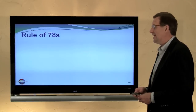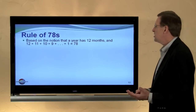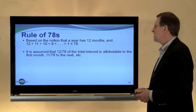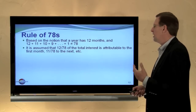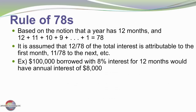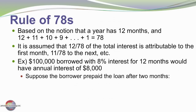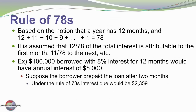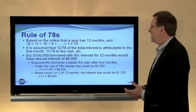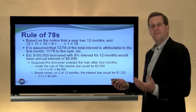There's another method of allocating interest called the Rule of 78s that you should try to avoid. It's based on the notion that a year has 12 months and the sum of 12 + 11 + 10 + ... + 1 equals 78. Under the Rule of 78s, 12/78 of total interest is allocated to the first month, 11/78 to the next, and so forth. For example, on a $100,000, 8%, 12-month note, total interest is $8,000. If the borrower prepaid after two months, the Rule of 78s charges (12+11)/78 × $8,000 = $2,359, versus just 2/12 × $8,000 = $1,333 under a simple monthly approach. The Rule of 78s tips interest allocation to the front end — an unfair method in many respects.